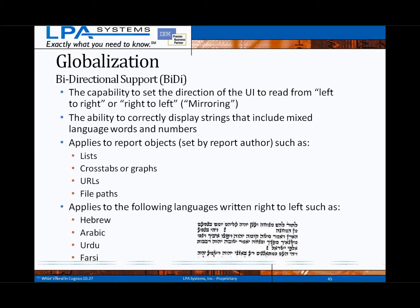In addition to new language support, Cognos 10.2 also now supports bi-directional, or bi-di, capability. This provides customers with the ability to mirror the presentation of content. Instead of the default left to right, content can be set to display right to left. This is a dramatic improvement for specific languages which are typically written right to left, such as Hebrew, Arabic, et cetera.